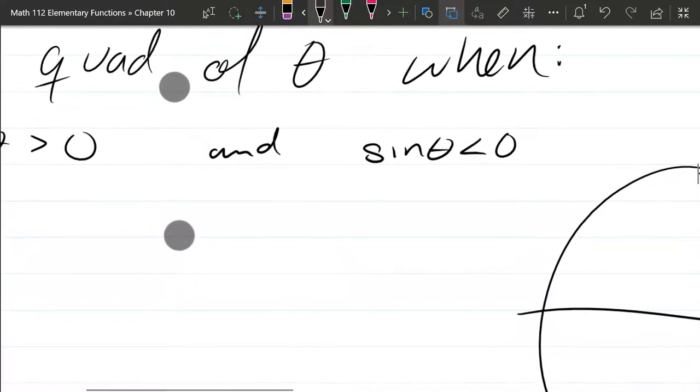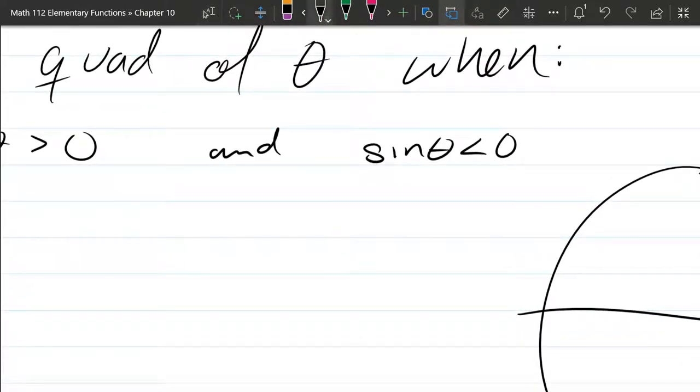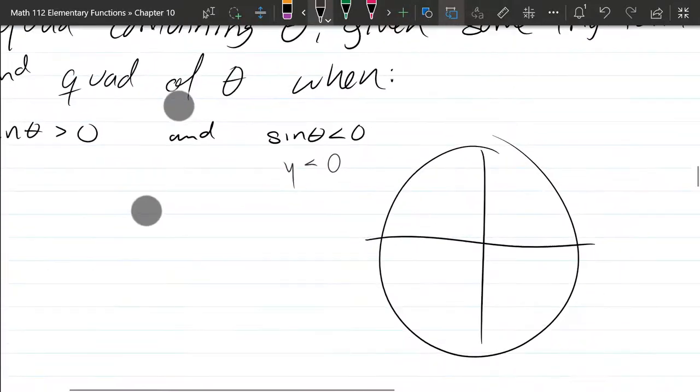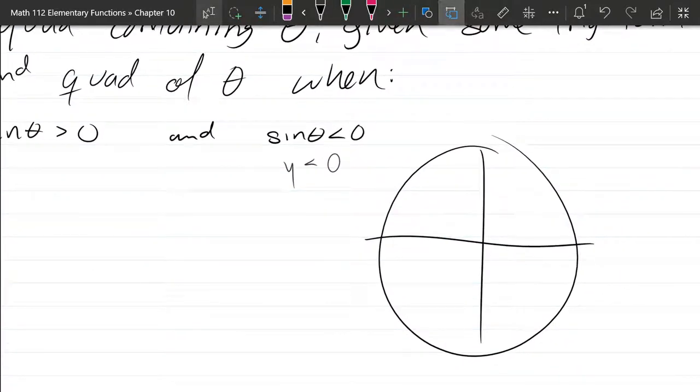All right, let's start with sine because sine is just y, so sine is y and y is less than zero. Okay, so y is less than zero. That means we're already in quadrant three or four.